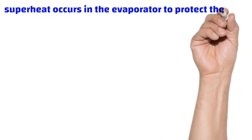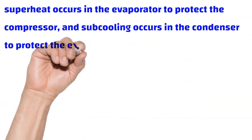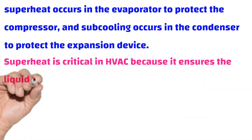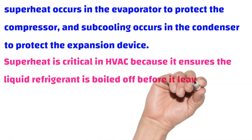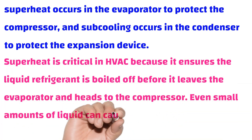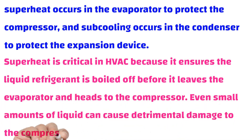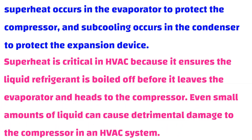The target superheat temperature is generally 3°C to 5°C, or 4°C to 6°C for electronic expansion valves. Superheat occurs in the evaporator to protect the compressor, and sub-cooling occurs in the condenser to protect the expansion device. Superheat is critical in HVAC because it ensures liquid refrigerant is boiled off before it leaves the evaporator and heads to the compressor — even small amounts of liquid can cause detrimental damage to the compressor.